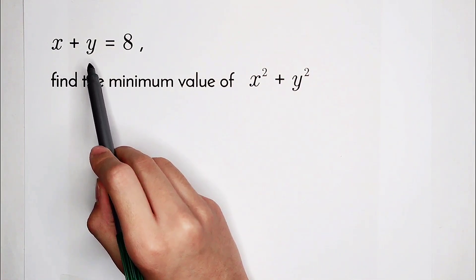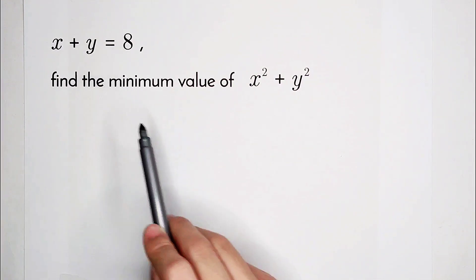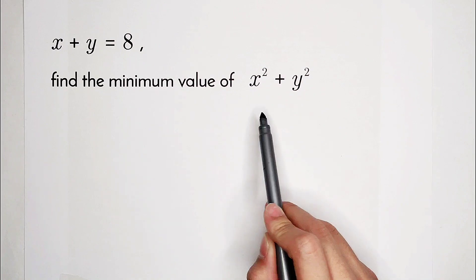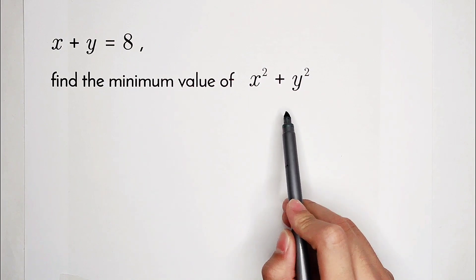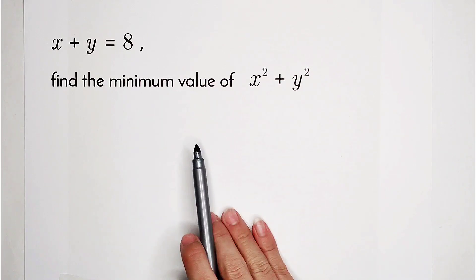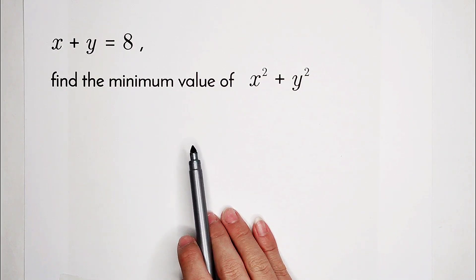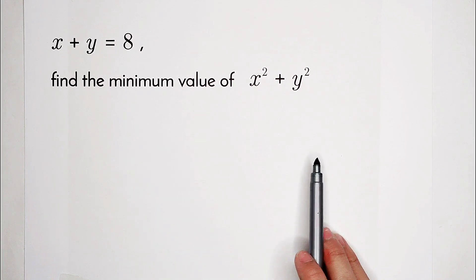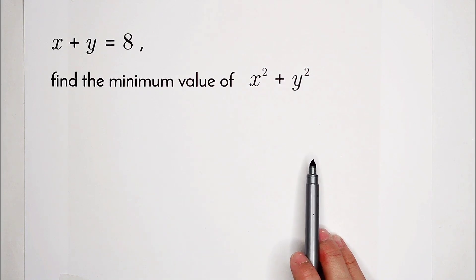Given x plus y equals 8, find the minimum value of x squared plus y squared. Oh my god, what should we do? In this video, I'm going to show you three methods to this question. Are you ready? Let's go!